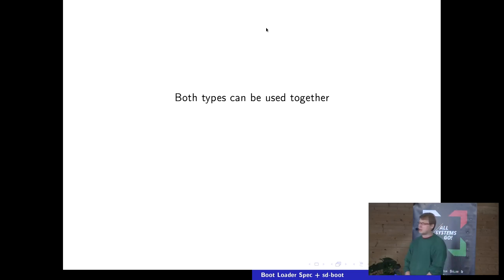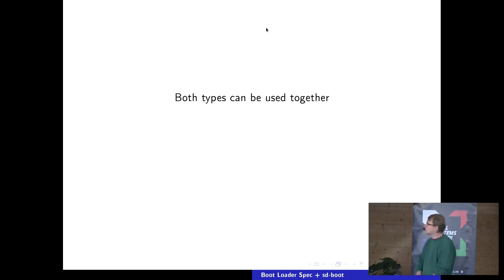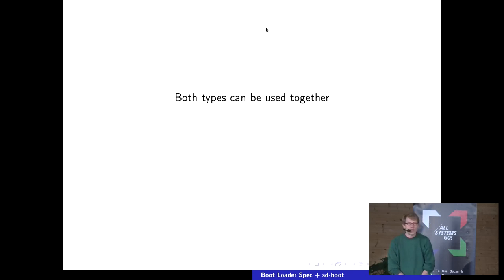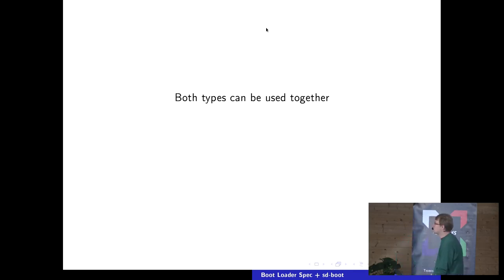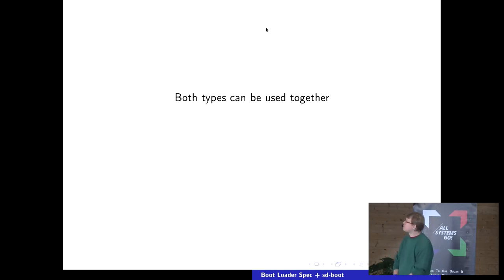Both types are supposed to be complementary — you can use them together. If you install multiple operating systems on your hard disk, they will all share the same ESP or the same $boot location. All these operating systems can drop in their own boot menu items by dropping in one or more files. Because they each drop in their own files, they will not step on each other's files.